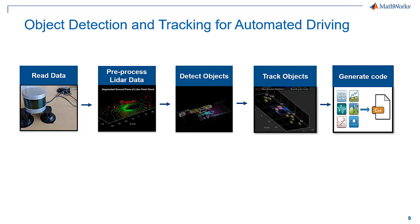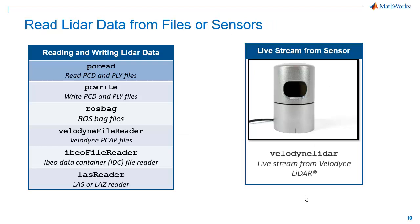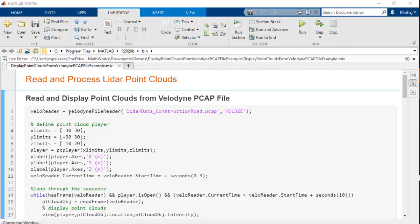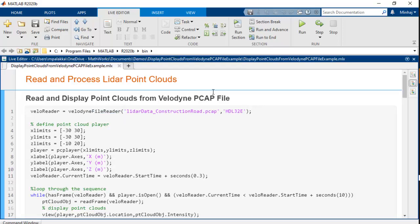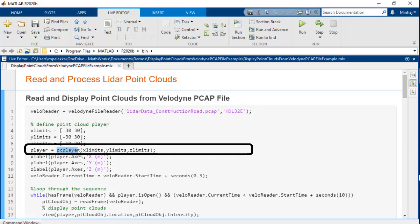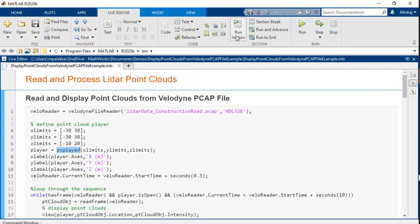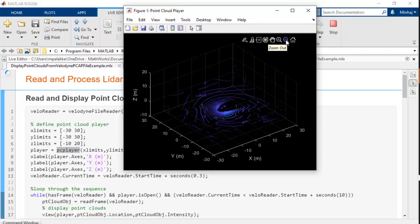Let's start with bringing point cloud data into MATLAB. MATLAB provides flexibility to read point cloud data from multiple file formats like PCD, PLY, PCAP, etc. You can also stream point cloud data directly from Velodyne sensors, and you can read point cloud data stored in ROSBAG files. To demonstrate this in MATLAB, we will use the Velodyne file reader function to read point cloud data in PCAP format. To visualize the point cloud, we will use PC Player, which is a very efficient way to visualize and analyze point clouds. It allows you to zoom, rotate, and pan point clouds.